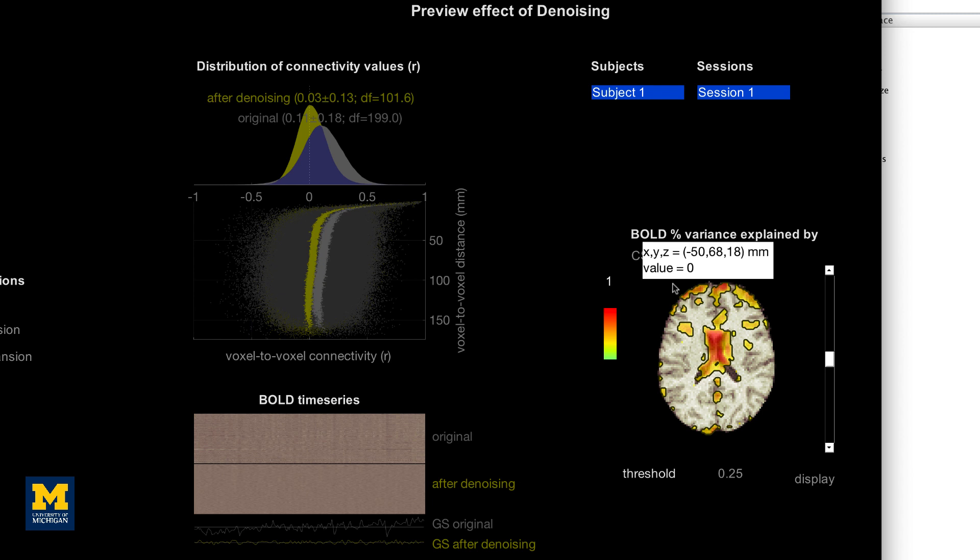For most data sets, these figures right here should look pretty similar. The distribution of connectivity values will be centered close to zero and the BOLD time series will be smoothed out. If the data passes those checks, you are ready to begin estimating a general linear model using those regressors. We will see how to do this in the next video.